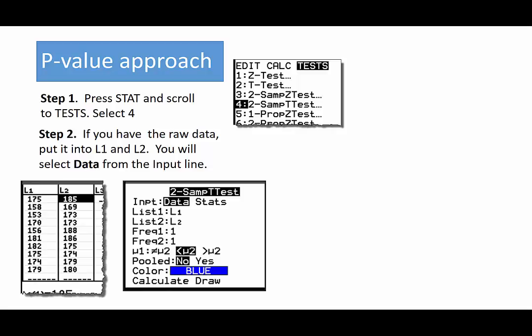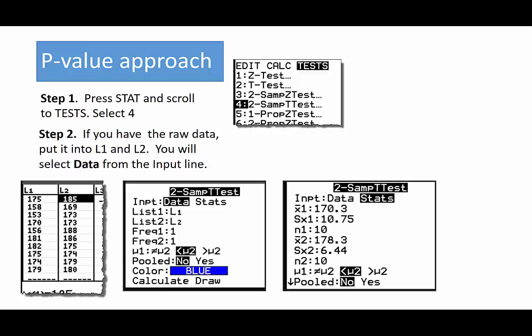List one is L1, list two is L2. Frequency one and frequency two are both one. We choose μ1 as less than μ2. We always select no for the pooled and select calculate.